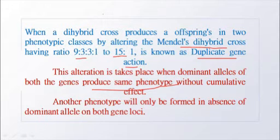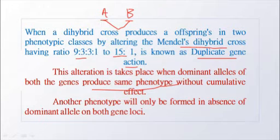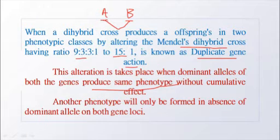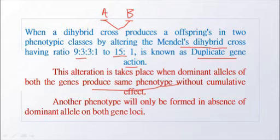If there are two genes present in an offspring — suppose gene A and gene B — the dominant allele of gene A and the dominant allele of gene B will show the same type of phenotype. This is known as duplicate gene action, meaning gene A will produce the same phenotype as gene B, or gene B will produce the phenotype like gene A.